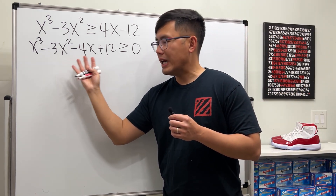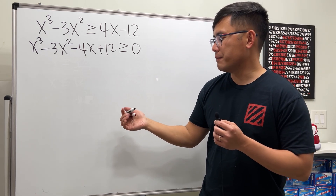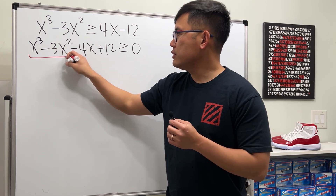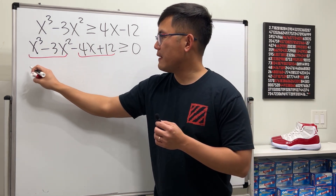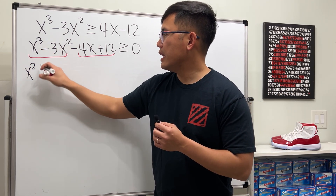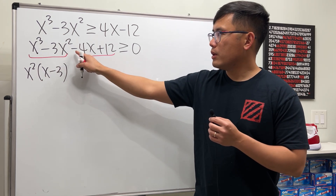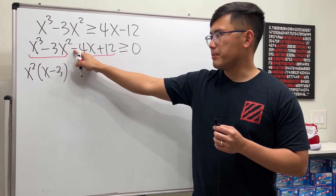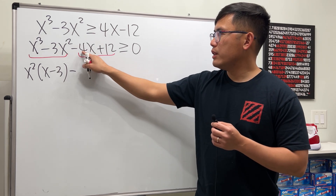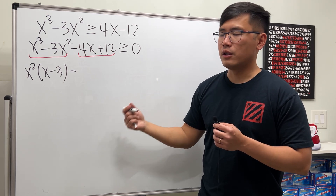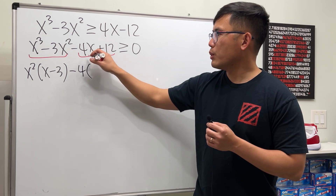Now we have four terms, so it's a good idea to try factoring by grouping first. Take these two terms and these two terms. We can factor out x² from the first group to get x² times (x minus 3). Then look at the 4 and 12 — we can factor out negative 4, so put that down.